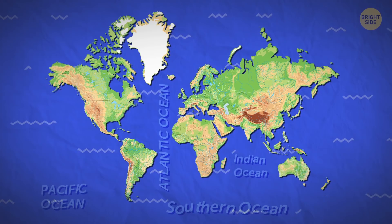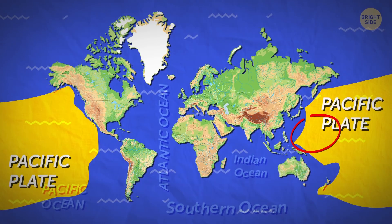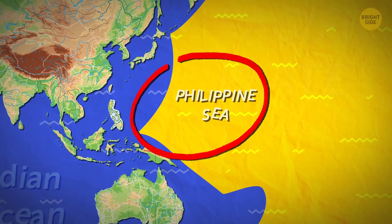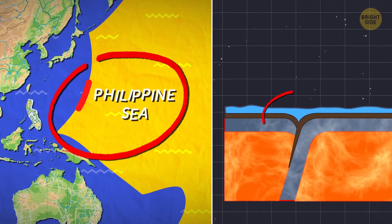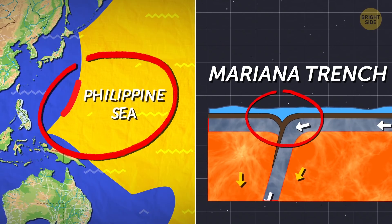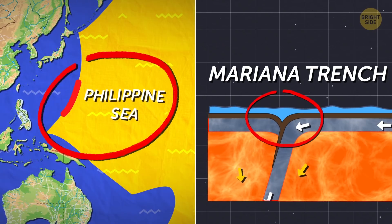Another clue is that the western part of the Pacific plate is subducting under the Philippine Sea, which created the Mariana Trench, the deepest part of the Pacific Ocean. But this is just a theory.